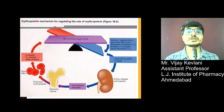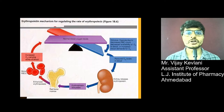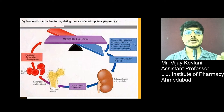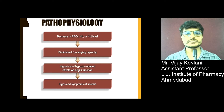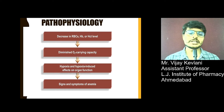There will be a condition when sufficient amounts of factors like iron, vitamin B12, vitamin B6, folic acid, riboflavin, or copper are not available in sufficient quantity, and that will lead to impairment of erythropoiesis or hemoglobin synthesis. Finally, it will lead to anemia. A decrease in RBC, hemoglobin, or hematocrit level leads to diminished oxygen-carrying capacity, which produces hypoxia and hypoxia-induced effects on organ function, and finally anemia is observed.